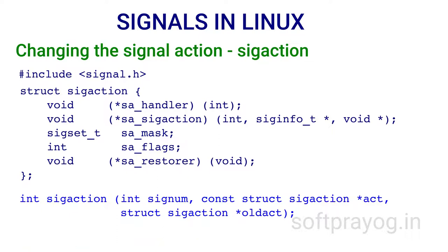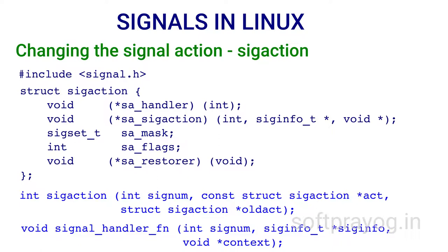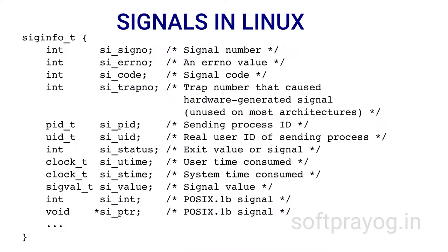When SA_SIGINFO is specified in SA_FLAGS, SA_SIGACTION is a pointer to the signal handler function to be installed. The prototype is: void signal_handler_fn(int signum, siginfo_t *siginfo, void *context). The first parameter is the signal number for which the handler is invoked. The last parameter context is not to be used by the signal handler function.